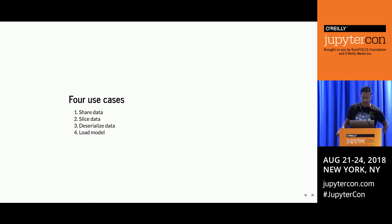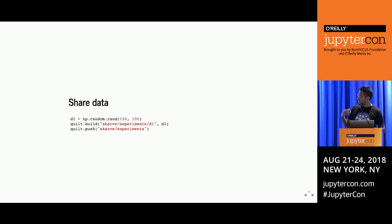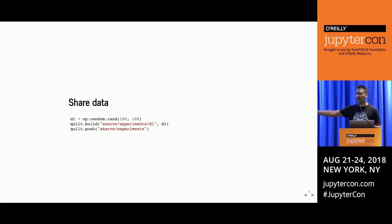We're going to organize this talk around code samples you can bring back to your teams and get immediate value from. Really simple problem: I've got data, produced a result on my machine, and want to share it with other people. The workflow: the first line is a numpy array—imagine this is actual structured data. I'm going to do two things: build that data image locally, and the namespace is constructed from the package owner, the package name, and a subfolder inside that package. I assign the value of the numpy array to that namespace, and when I push it, it's available on a remote registry.